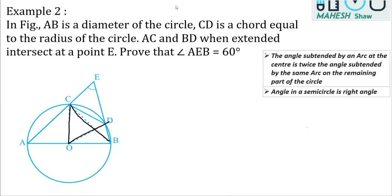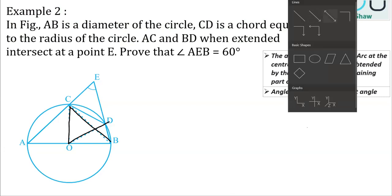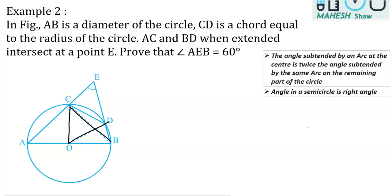Here we are going to use the property of the alternate segment to solve it. But first, we need to prove that triangle COD is an equilateral triangle. Chord CD is given equal to the radius of the circle, so it becomes an equilateral triangle.